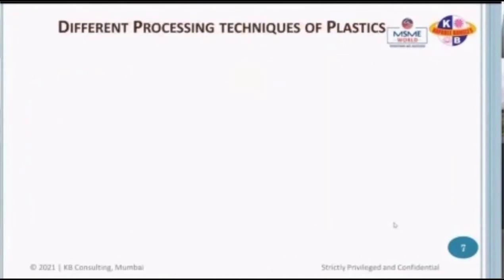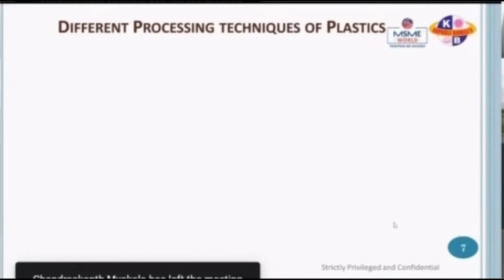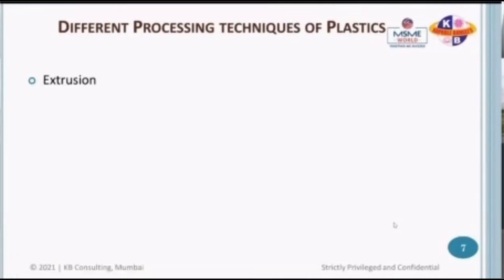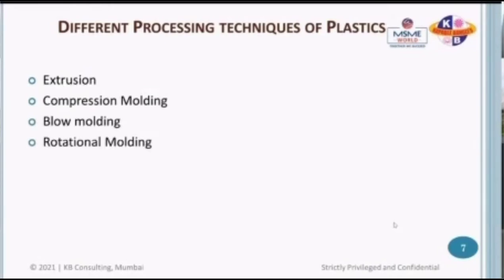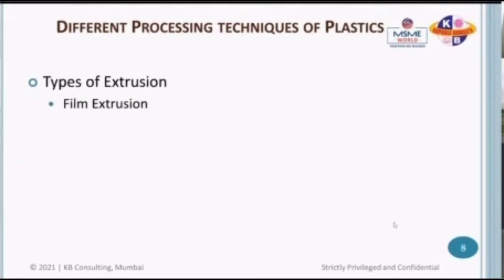Now you understand the process of creating a new product. I'm going to share different processing techniques of plastics: extrusion, compression molding, blow molding, rotational molding, thermoforming, and last but not least, injection molding. We're going to cover these six processes. Let's go to the first process — extrusion.